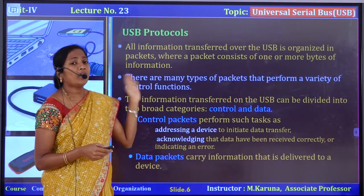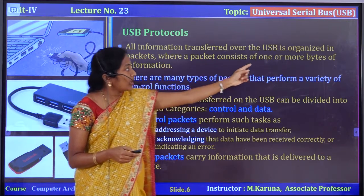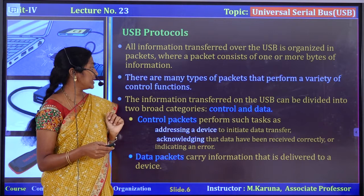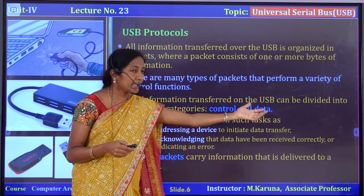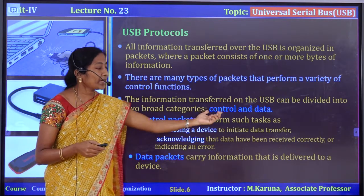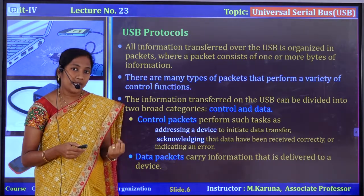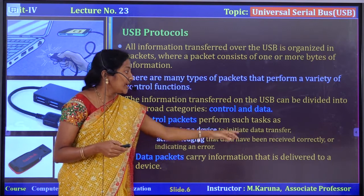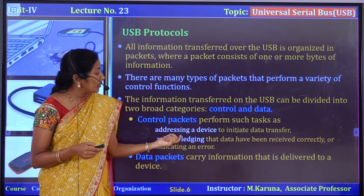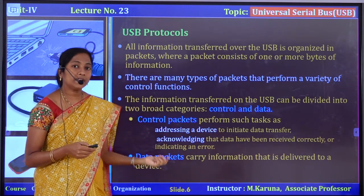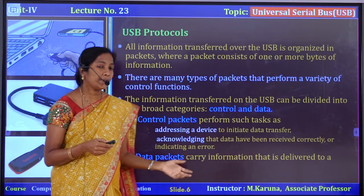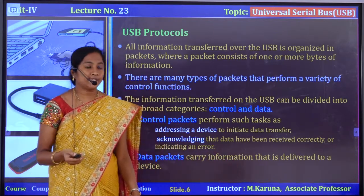USB protocols: all information transferred over the bus is organized in packets. A packet consists of one or more bytes of information. Information transferred on USB is divided into two categories: control packet and data packet. The control packet consists of control information or status of the data transfer, addressing a device to initiate data transfer, acknowledgement bits, and checks whether data is received correctly or not. The data packet carries information to all the devices.